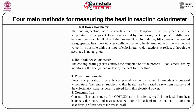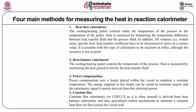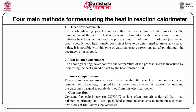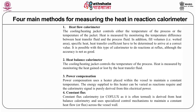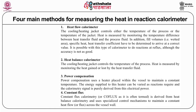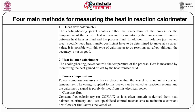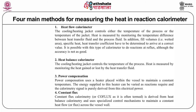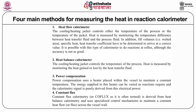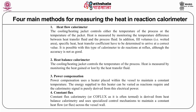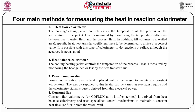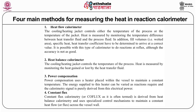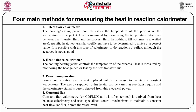There are mainly four types of reaction calorimeters. The first is the heat flow calorimeter, where a cooling or heating jacket controls either the temperature of the process or the temperature of the jacket, and heat flow is measured by monitoring the temperature difference between the heat transfer fluid and the process fluid. Fill volumes and specific heat and heat transfer coefficient also need to be determined. It is possible to do reactions at reflux with this type, although accuracy is not very good.